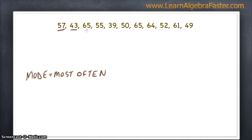Let's look for 65s. 65 happens once and twice. So now we know 65 could possibly be our mode. Let's look at 55. It happens once, but not again. 39 happens once, but not again. 50 is the same. 64 is the same. 52, 61, 49 all happen one time in the set. So we have found our mode, which is 65.